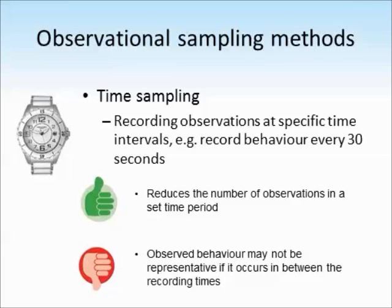However, the observed behaviour might not be representative if it occurs in between the recording times. So if we're watching for aggression in children, they might not be doing anything aggressive when you get to your set recording point, but they might do so in between those points. So you're not seeing a representative sample of their behaviour.